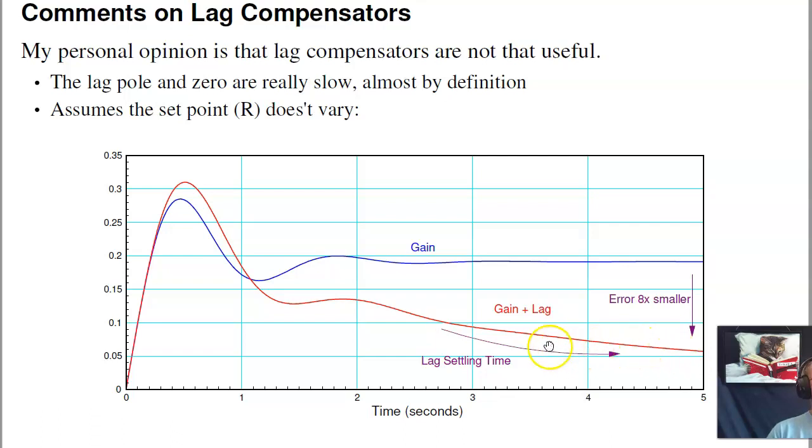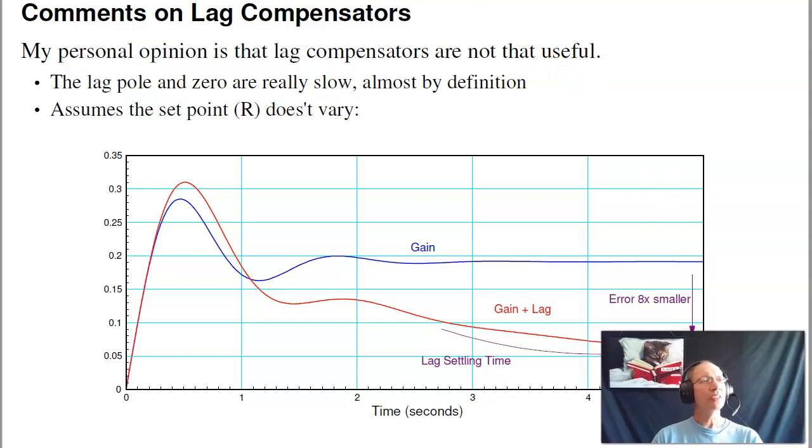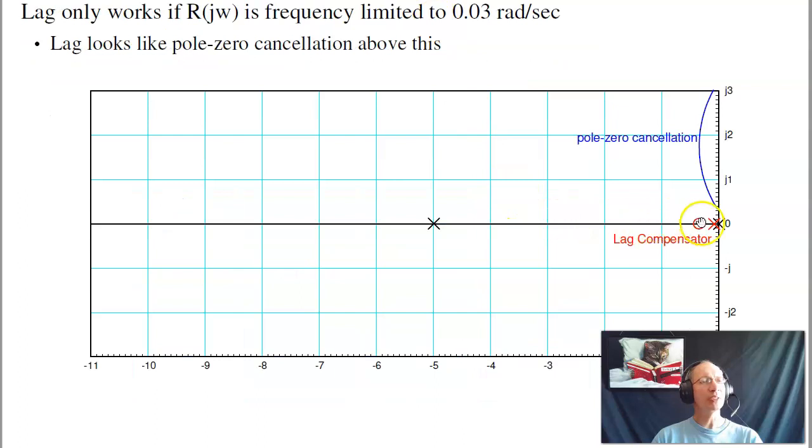Another problem is this works as long as my setpoint doesn't vary. If this is truly a ramp and doesn't change, then it will improve. If R varies any way, then the lag compensator basically has no effect. And you can see that from a frequency domain standpoint, or maybe from root locus.